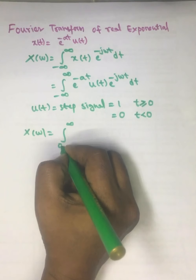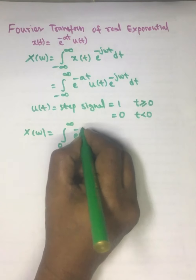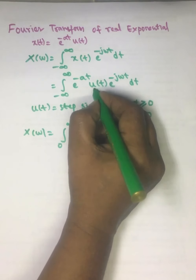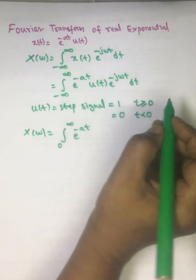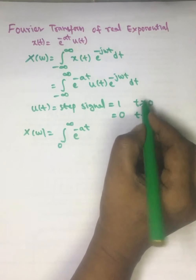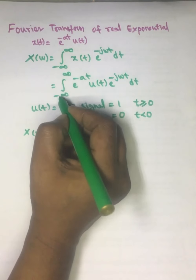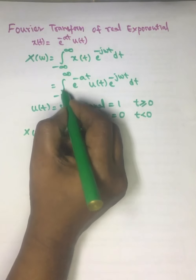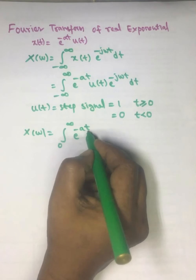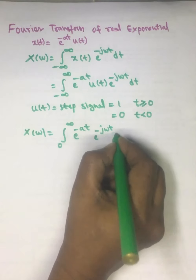Since u(t) is present, this integral becomes an integral from 0 to infinity, because u(t) = 0 for t less than 0. That is why the integral becomes from 0 to infinity of e^(-at). We remove u(t) since its definition gives us 1 for t ≥ 0, so it becomes the integral from 0 to infinity of e^(-at) e^(-jωt) dt.